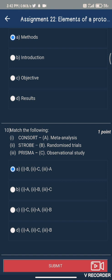STROBE is related to option C, Observational Study, and PRISMA is related to option A, Meta-analysis.